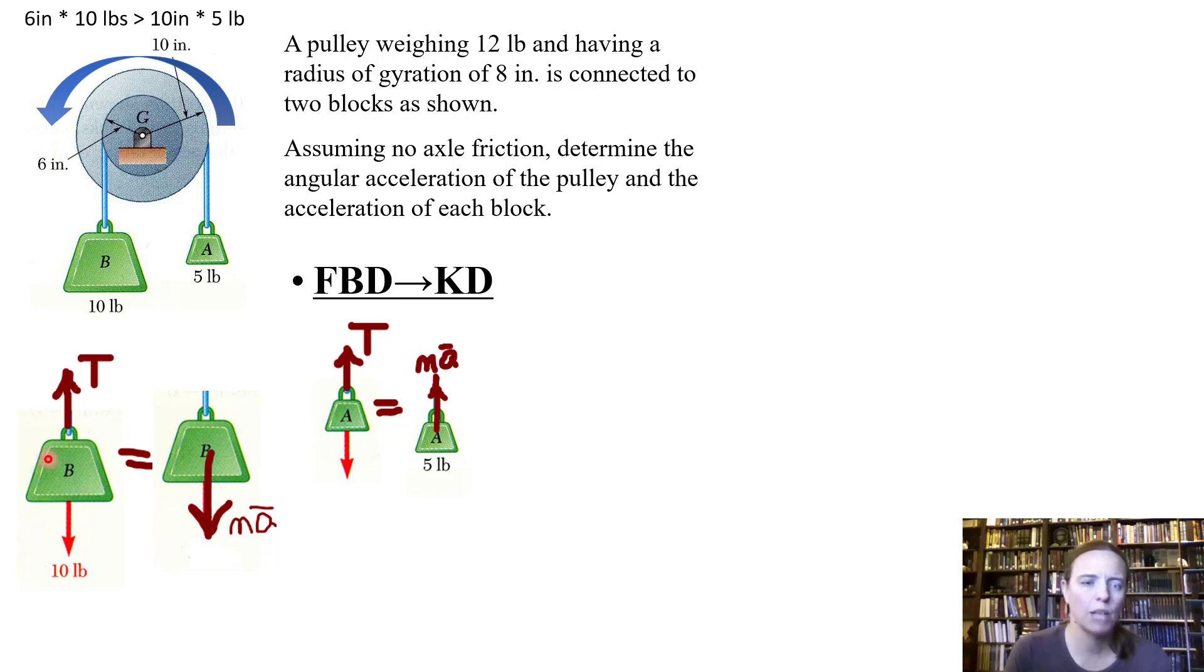For the blocks, they're just moving straight up and down, no rotation, so we can do a straight force balance on them. B is moving down counterclockwise. We've got the tension pulling up on it, the weight going down, and it's not static. If it's moving down, that means the weight is more than the tension. Versus A, which is moving up - that means the tension is larger than the force holding it down. So A is going to have an acceleration going up. We have some free body diagrams and kinetic diagrams for our blocks.